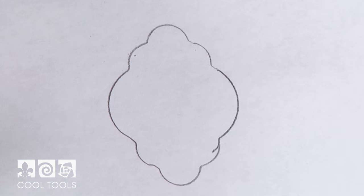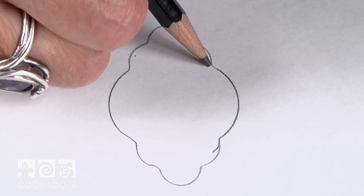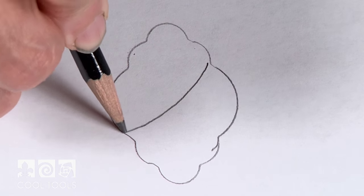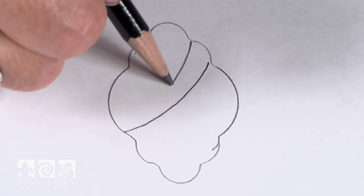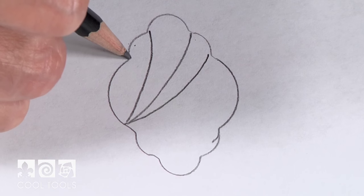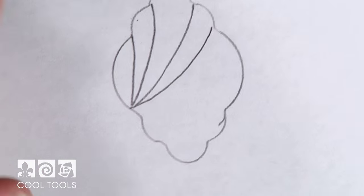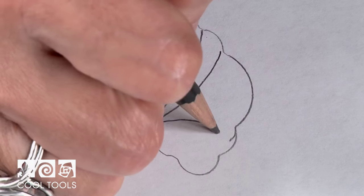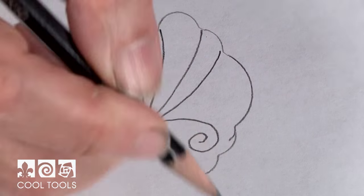Once I get my outline drawn, I then will come in and fill in with my design. I use very simple designs - you can make these as ornate as you'd like. And if you want, you can even use straight edges, but I do everything kind of freehand. So I'll start by drawing some lines, I'll do a spiral or two.